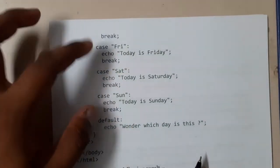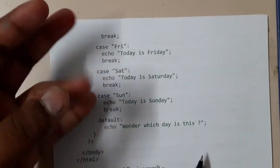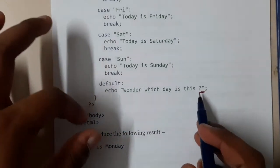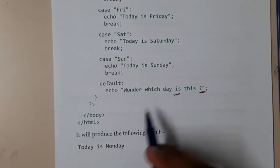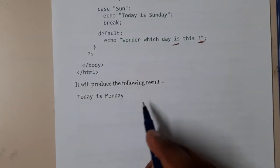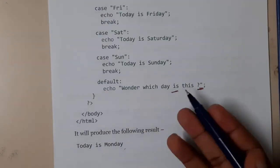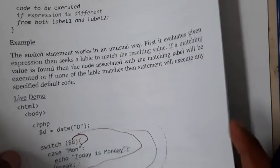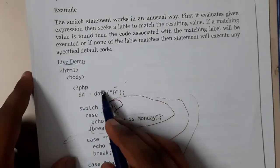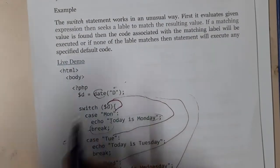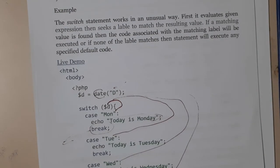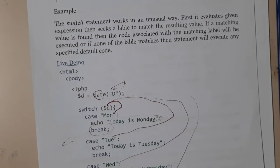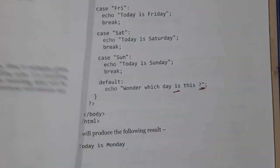Here we wrote six case statements for Monday, Tuesday, Wednesday, Thursday, Friday, Saturday, and Sunday. The default case executes if none of the cases matched. It appears the date was Monday, so Monday matched and the output was 'Monday'. Note: when using date this way, it collects the date from the system — please confirm this before writing it in your exam.